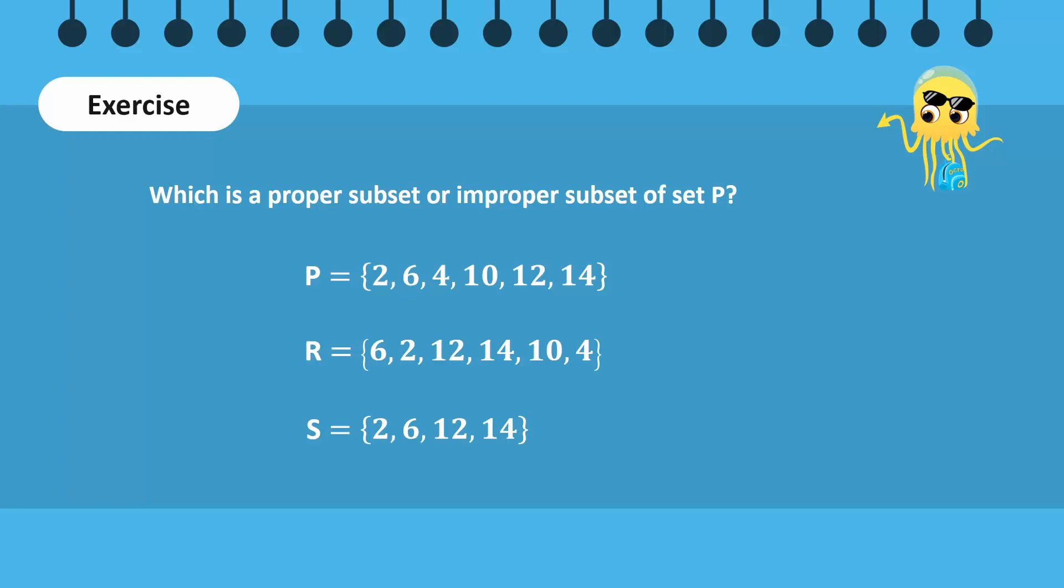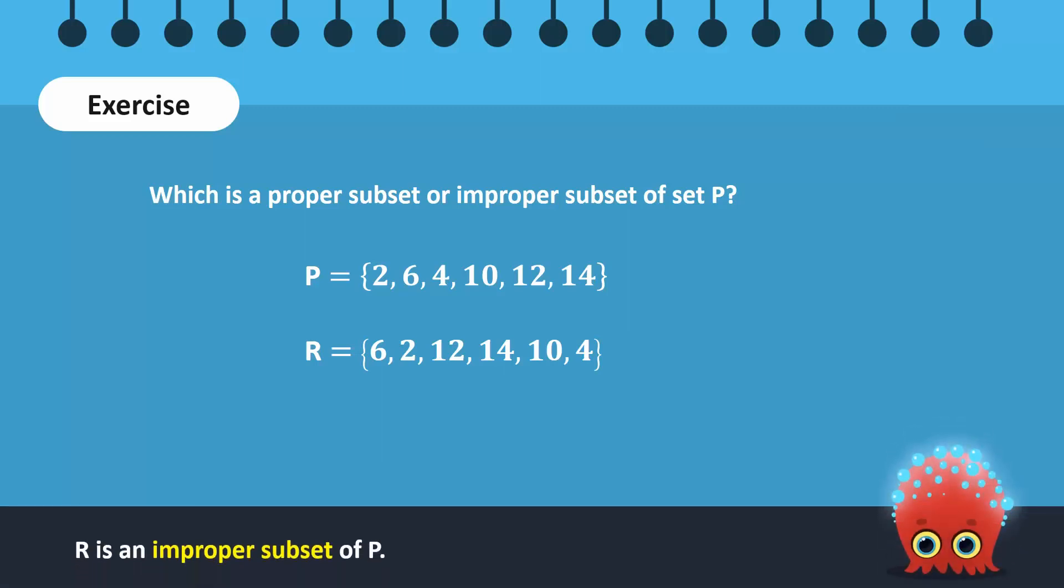Let's review. Observe that set R contains all the elements of set P. Although they are arranged differently, there is no element in P that is missing in R. Therefore, it is an improper subset of P.